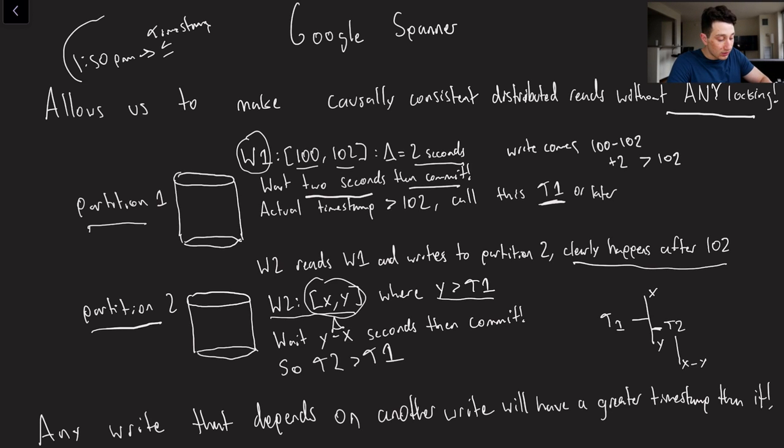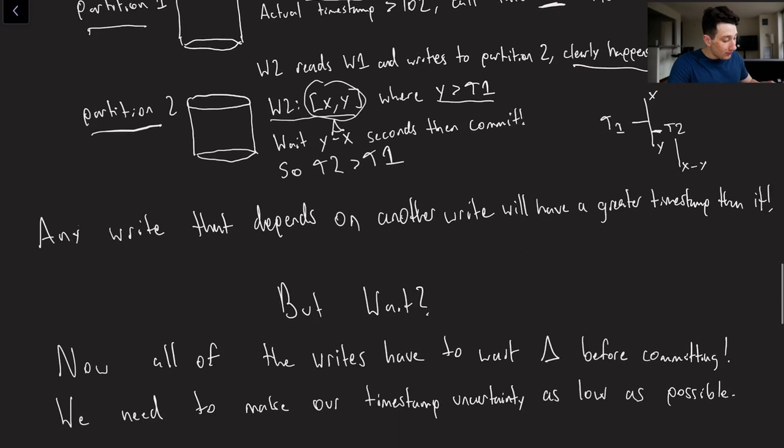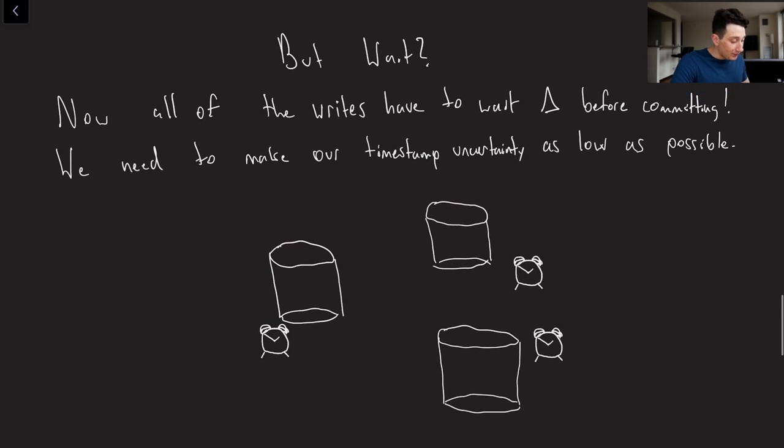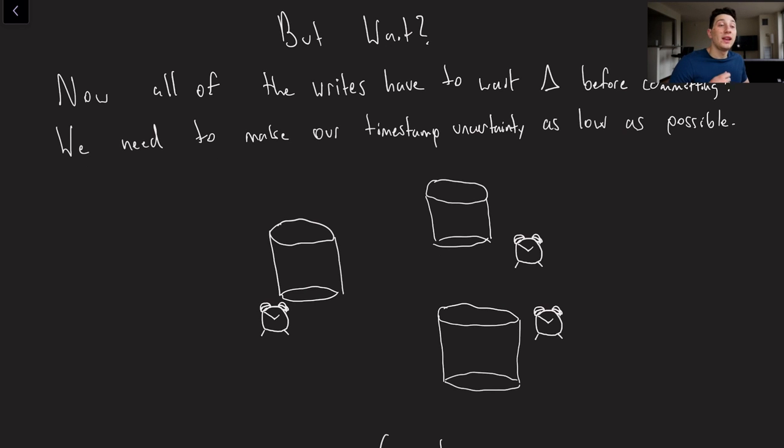We can say, give me all writes with a timestamp less than or equal to a certain timestamp, and we know that it's going to be causally consistent, which is a super useful principle. However, at the same time, you might be thinking, wait, if all of our writes have to wait the length of the time interval delta before we actually commit them, that is going to significantly slow down the performance of our database. You would be right if delta was big. If delta is super small, if we're very confident about the time interval that each write is in, then we actually don't have to wait a lot of time at all, and it's not a big performance hit. So how can we be super certain about the time interval that every single one of our writes reaches a database partition?